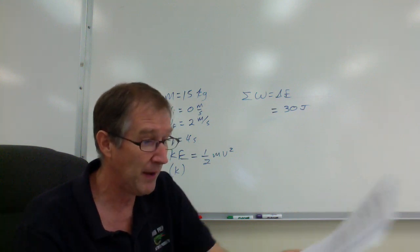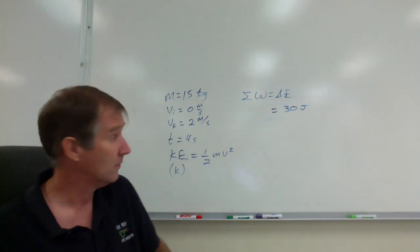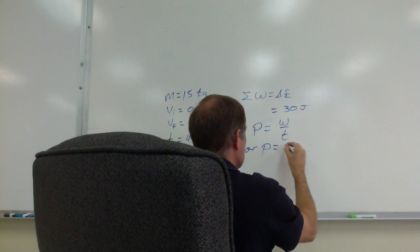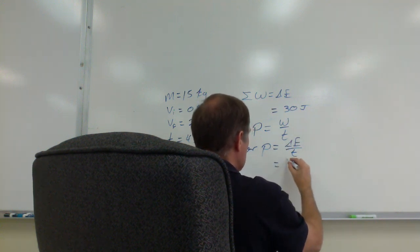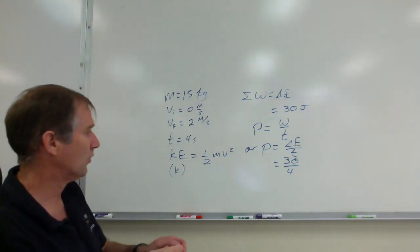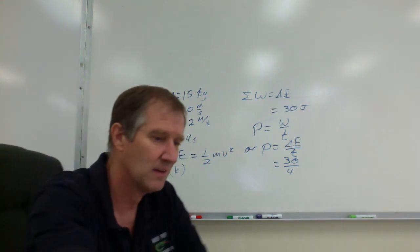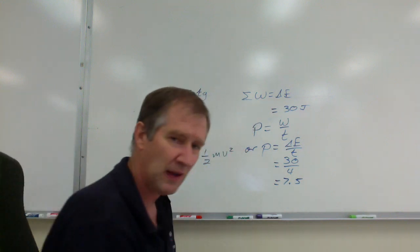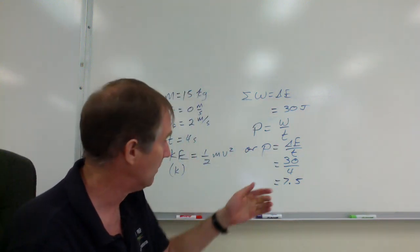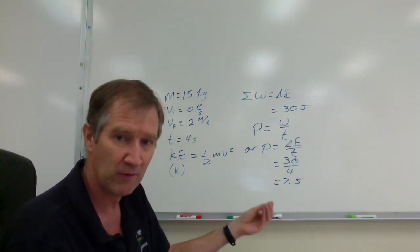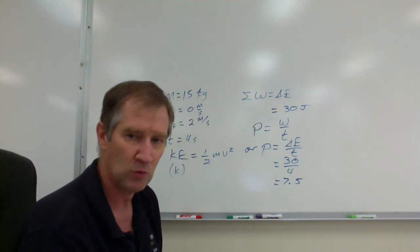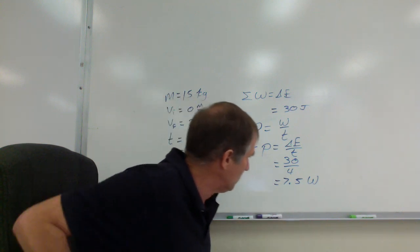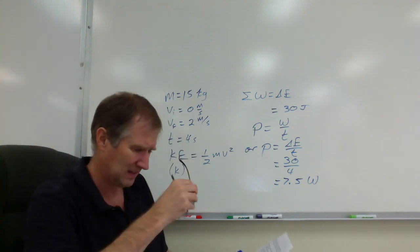Now calculate the power exerted. Power is work over time, or equivalently the change in energy over time. This box changes its energy by 30 joules over 4 seconds, so 30 divided by 4 is 7.5 joules per second. That's a rate of energy change — joules per second — which we name after James Watt. So the answer is 7.5 watts.